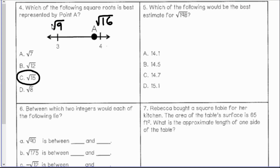Number 5: which of the following would be the best estimate for the square root of 198? Knowing my first 15 perfect squares, I know the square root of 198 is in between 14, which is the square root of 196, and 15, which is the square root of 225.